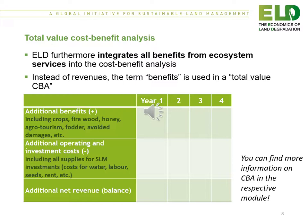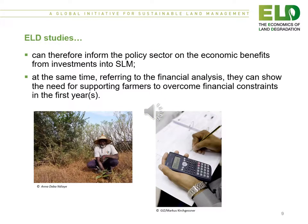The cost-benefit analysis attempts to look at the total values involved and integrates all the benefits from ecosystem services. Instead of revenues, the term 'benefits' is used in a total cost-benefit analysis. The table lists the total additional benefits and the total operational and investment costs to provide an idea of net revenue. ELD studies can therefore inform the policy sector on the economic benefits from investments into sustainable land management, and can also show the need for supporting farmers to overcome financial constraints in the first years.